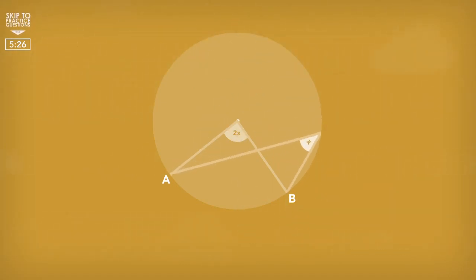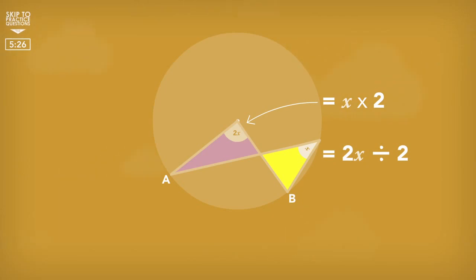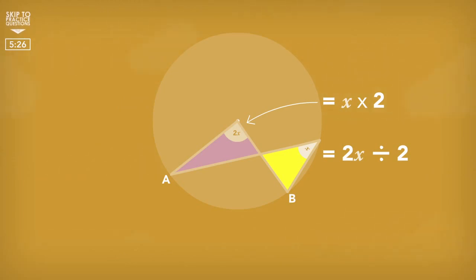This works even if the point at the circumference moves around the circle, as long as points A and B are stationary. The angle at the circumference will always be half the size of the angle at the center, regardless of where the point on the circumference is, and the angle at the center will always be twice the size of the angle at the circumference.